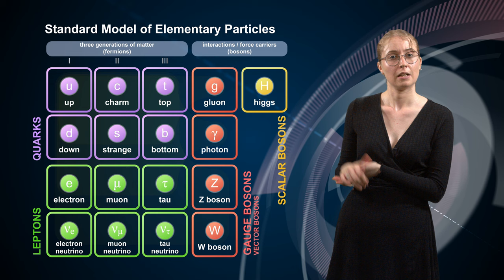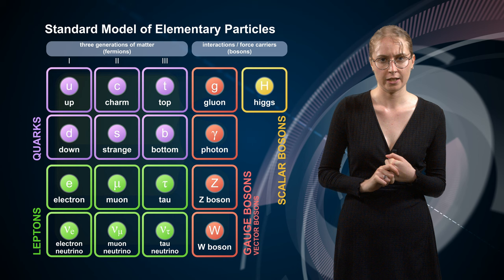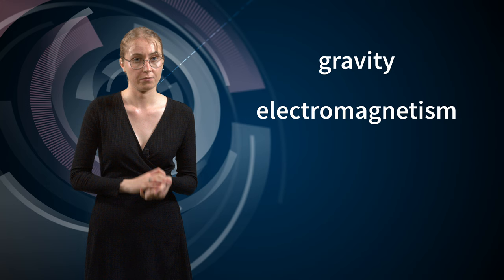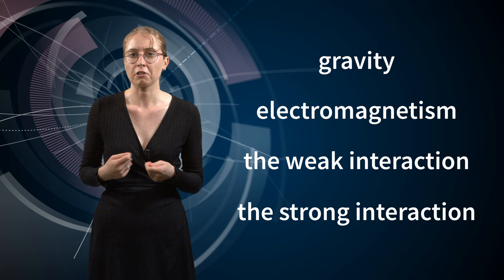Now we are a bit better equipped to take a look at the Standard Model of Particle Physics. This theory is one of the most significant and successful frameworks in modern physics. It describes the fundamental interactions between elementary particles. There are four fundamental interactions in the universe: gravity, electromagnetism, the weak interaction, and the strong interaction. The Standard Model does a great job of explaining all of these interactions, except for gravity. In fact, one of the great goals of physics today is to try and come up with a way to include gravity in this theory.